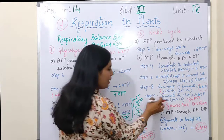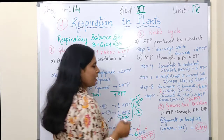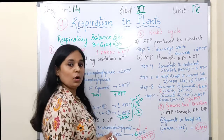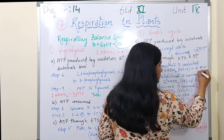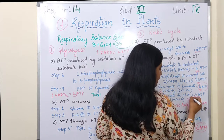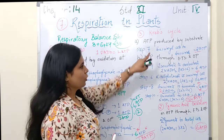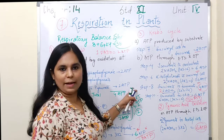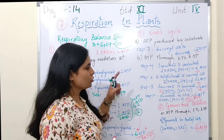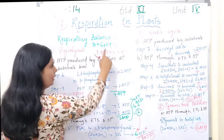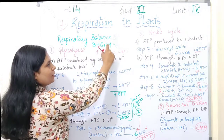Step 10 pe fumarate se oxaloacetic acid banta hai — again 2 NADH2 banta hai, so again 6 ATP. Ab agar hum in sab ko plus karein: 2 + 6 + 6 + 4 + 6 = total 24 ATP in Krebs cycle. 2 ATP direct banega, baaki electron transport system and oxidative phosphorylation ki wajah se. Glycolysis ke 8 ATP, pyruvate acid oxidation ke 6 ATP, aur Krebs cycle ke 24 ATP.